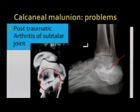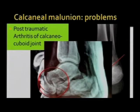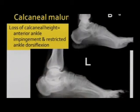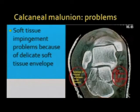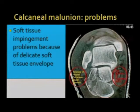What are the problems? There could be post-traumatic arthritis of the subtalar joint, as we all know, but there could also be post-traumatic arthritis of the calcaneo-cuboid joint. There would be loss of calcaneal height leading to anterior ankle impingement and restriction of ankle dorsiflexion.